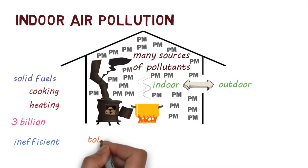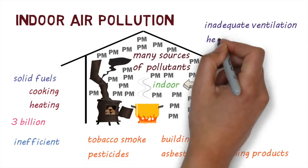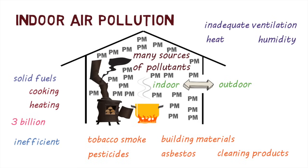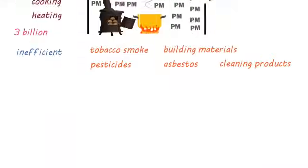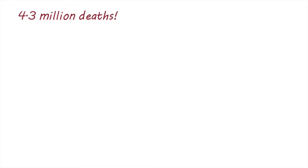Other sources include tobacco smoke, chemicals released from building materials, furnishings, and household products, pesticides, asbestos-containing insulation, and products used for household cleaning. Factors like inadequate ventilation and, in some cases, heat and humidity can worsen indoor air pollution. Exposure to indoor air pollution can lead to health effects similar to those caused by outdoor air pollution. In 2012, the World Health Organization estimated that 4.3 million people died due to illness that could be attributed to household air pollution caused by the use of solid fuel.